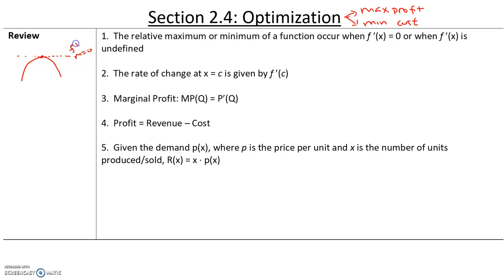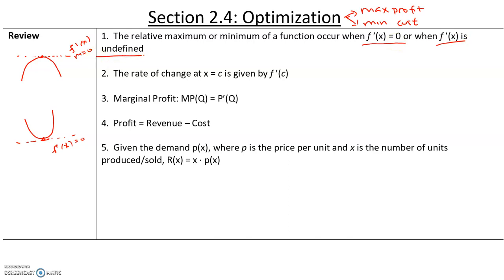The slope of the tangent line is also given by f prime of x. So this is when we have a maximum, and this is when we have a minimum. In either case, at the maximum and the minimum, the slope of the tangent line at that point is going to be equal to zero. The relative maximum or minimum of a function occur when f prime of x is equal to zero, or when f prime of x is undefined.